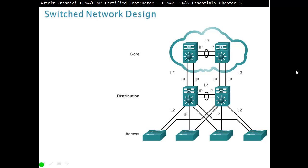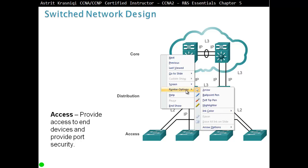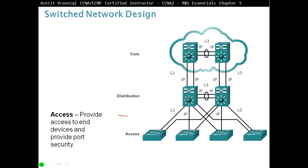When designing a network, we have Layer 2 switches and Layer 3 switches. Layer 2 switches work at the Access Layer, which provides access to end devices and provides port security. So these switches provide access to PCs and IP phones — that's where the name Access Layer Switch comes from — as well as port security.